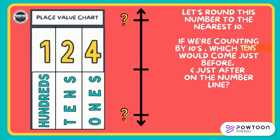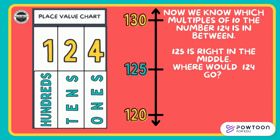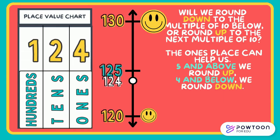Let's round this number to the nearest 10. Counting by tens, which tens would come just before and just after on the number line? Pause the video and figure it out with your partner. Now we know which multiples of 10 the number 124 is in between. We can see 120 right below and 130 right above. 125 is right in the middle of those two. So where would 124 go? Point to it on the number line. Will we round down to the multiple of 10 below or round up to the next multiple of 10? The ones place can help us: 5 and above, we round up; 4 and below, we round down. If I look at the ones place, I can see a 4 in the ones place of 124, so that tells me I'm rounding down. 124 rounded to the nearest 10 is 120, or 12 tens.